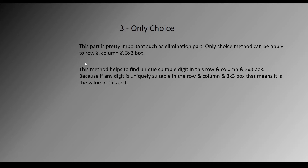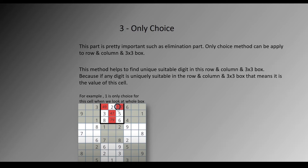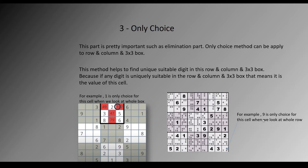The third sub-part is the only choice method, which is pretty important, just like the elimination part. The only choice method can be applied to a row, column, or 3x3 box. This method helps find a unique suitable digit in a row, column, or 3x3 box — because if any digit is uniquely suitable in a row, column, or 3x3 box, that means it is the value of that cell. For example, in this box, 1 is the only choice for this cell when we look at the whole box. And in this row, 9 is the only choice for this cell when we look at the whole row.